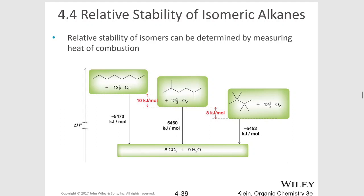To determine the stability of isomeric alkanes, we use something called a heat of combustion. The larger the heat of combustion for an organic molecule, the less stable it is. If you compare these isomers of octane, which has eight carbons, we can see that octane itself gives off, if you burn it, 5,470 kilojoules per mole.